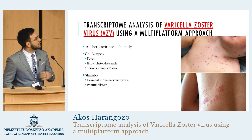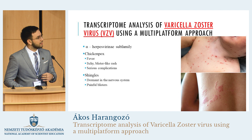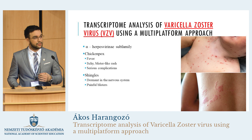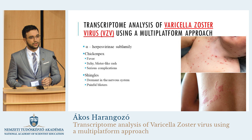Varicella-Zoster is a herpesvirus. It belongs to the alpha-herpesvirus subfamily, the same as herpes simplex. It causes a disease called chickenpox, which is mostly benign, but it can cause some serious complications. The usual symptoms are blisters and fever, and the serious complications are meningitis, encephalitis, and Guillain-Barré syndrome.